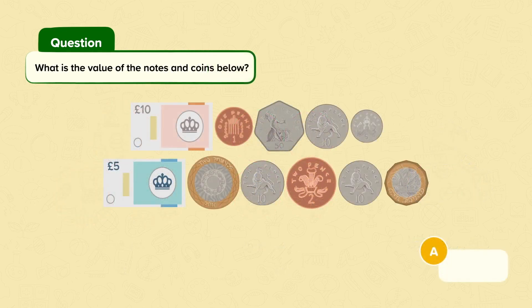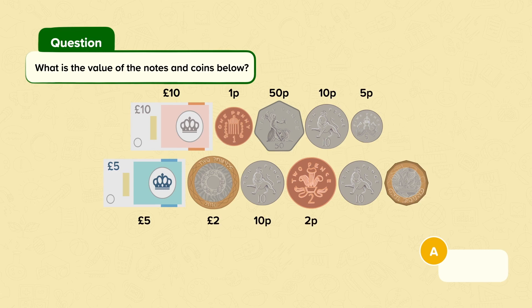What is the value of the notes and coins below? First we can label all of the notes and coins. This is a 10 pound note, this is a 1p coin, this is a 50p coin, this is a 10p coin, this is a 5p coin, this is a 5 pound note, this is a 2 pound coin, this is a 10p coin, this is a 2p coin, this is a 10p coin, and this is a 1 pound coin. It is easier to arrange these with pounds and pence separately.